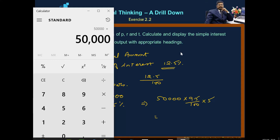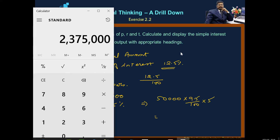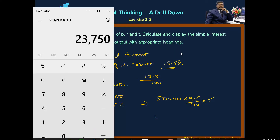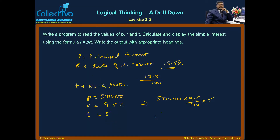So: 50,000 multiplied by 9.5 multiplied by 5 divided by 100. For 5 years, we will get 23,750 as the simple interest.